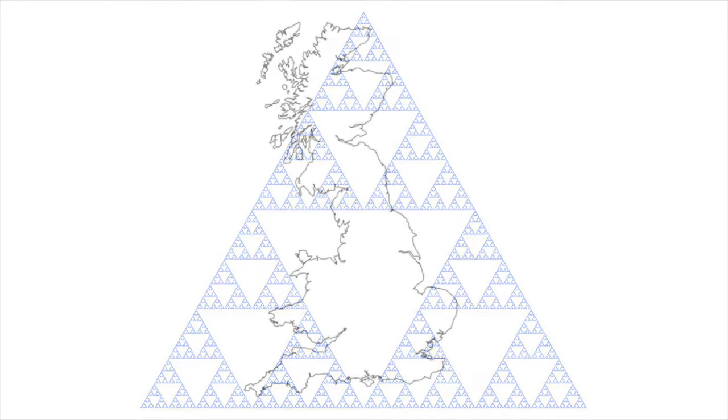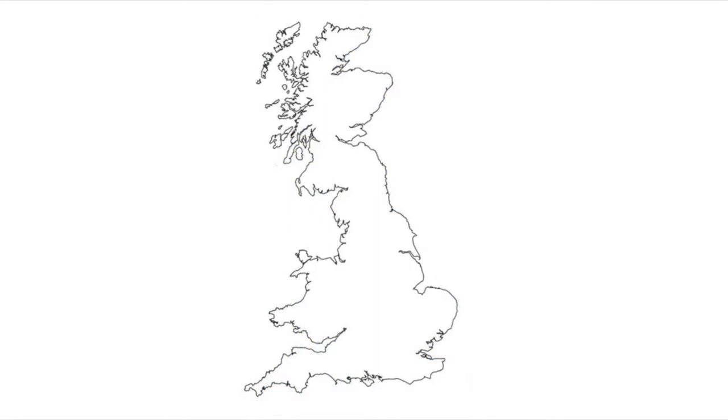In nature, most fractals aren't exactly self-similar. However, they are statistically self-similar, and so we can still work out their fractal dimension by applying the box method as before. When this is done,